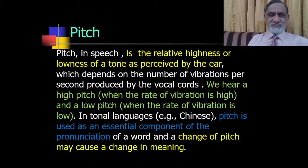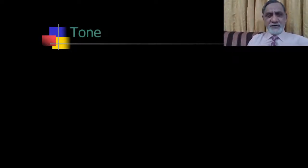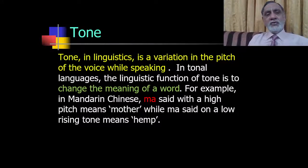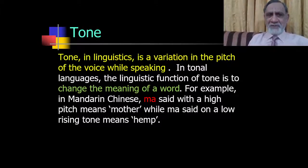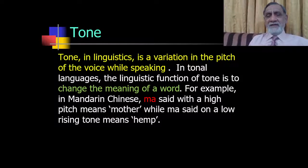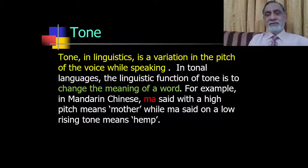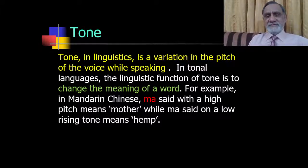The second suprasegmental feature is tone. Tone in linguistics is a variation in pitch of voice while speaking. In tonal languages, the linguistic function of tone is to change the meaning of a word. An example from Chinese: the word 'ma' said with a high pitch means 'mother', and the same word said with a low pitch means 'hemp' — called 'bhang' in Urdu. So changing the pitch can change 'mother' into 'hemp'. That is the importance of tone.